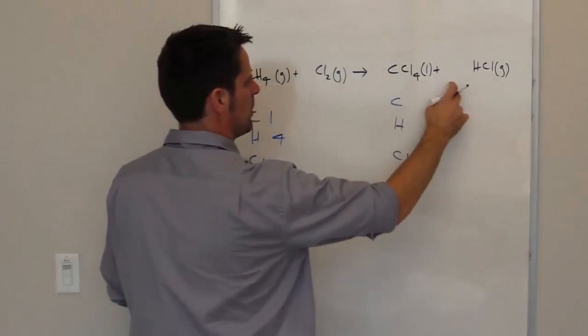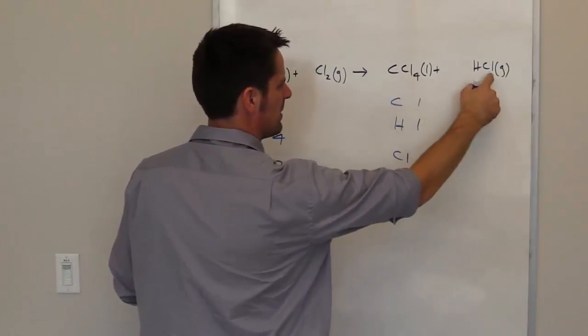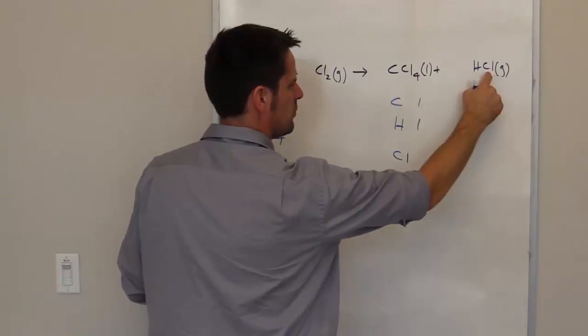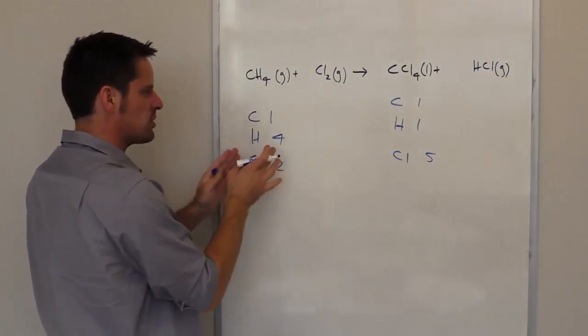How many carbons do I have on the right? Well, I've got one. How many hydrogens? I've got one. And how many chlorines? Well, I've got one, two, three, four, five. So I've got five chlorines. My carbons are balanced. My hydrogens are not.